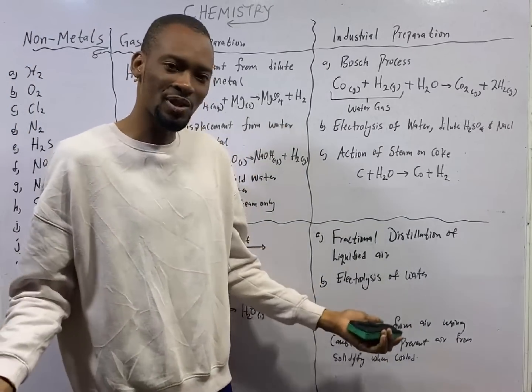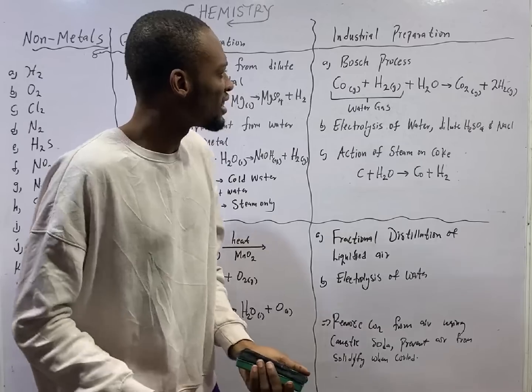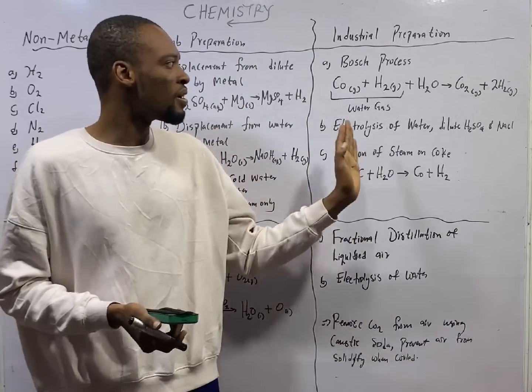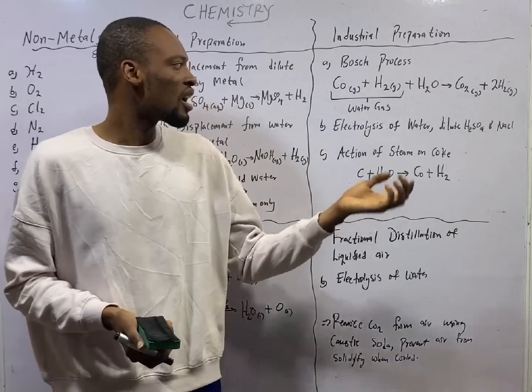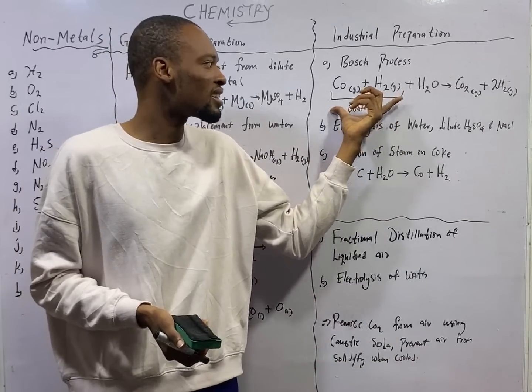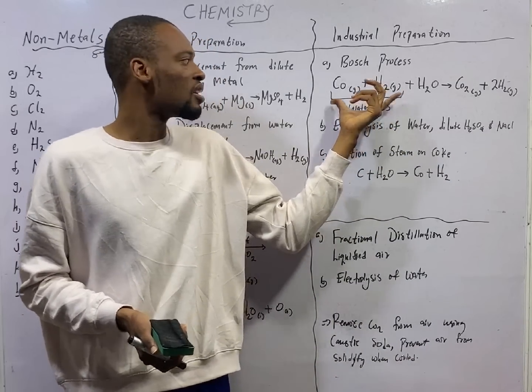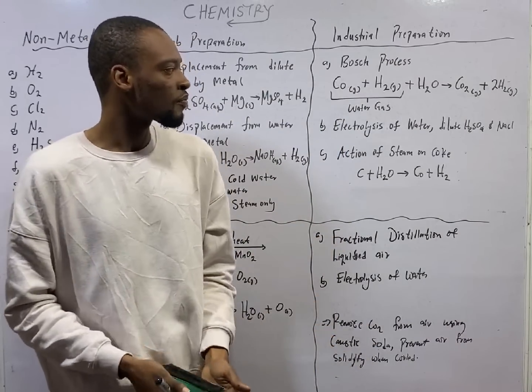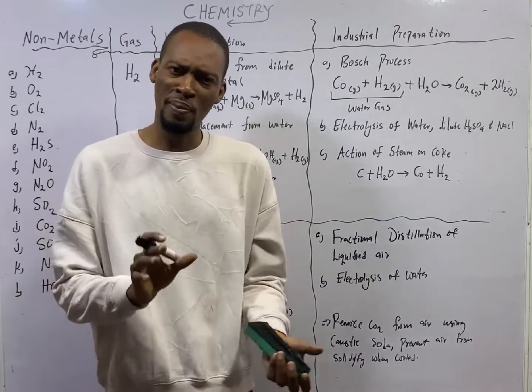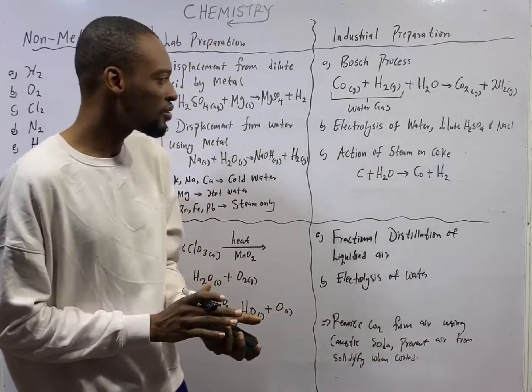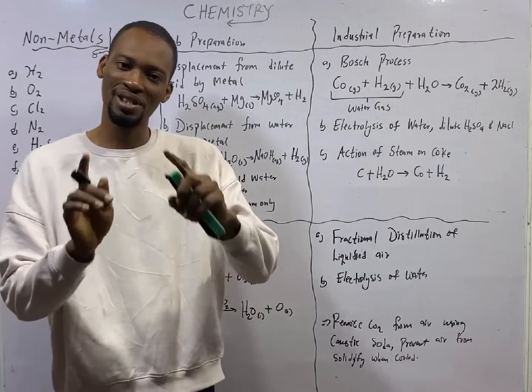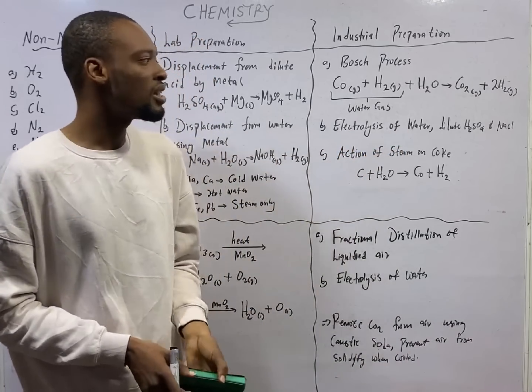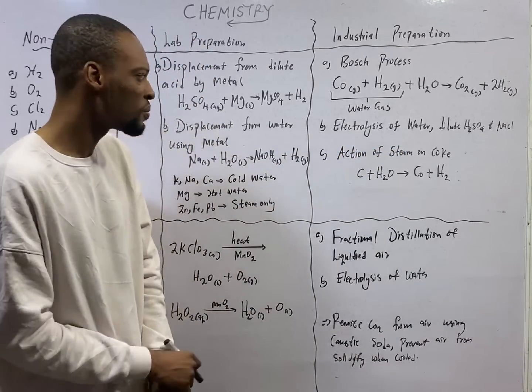Let's see the industry. Under industrial processes, I tell you that Bosch process is the industrial process used in the preparation of hydrogen. And hydrogen is formed from water gas in the Bosch process. CO plus H2 together I refer to as water gas. And the second way to prepare hydrogen in the laboratory, though in the industry, is electrolysis of water, dilute H2SO4 and sodium chloride.